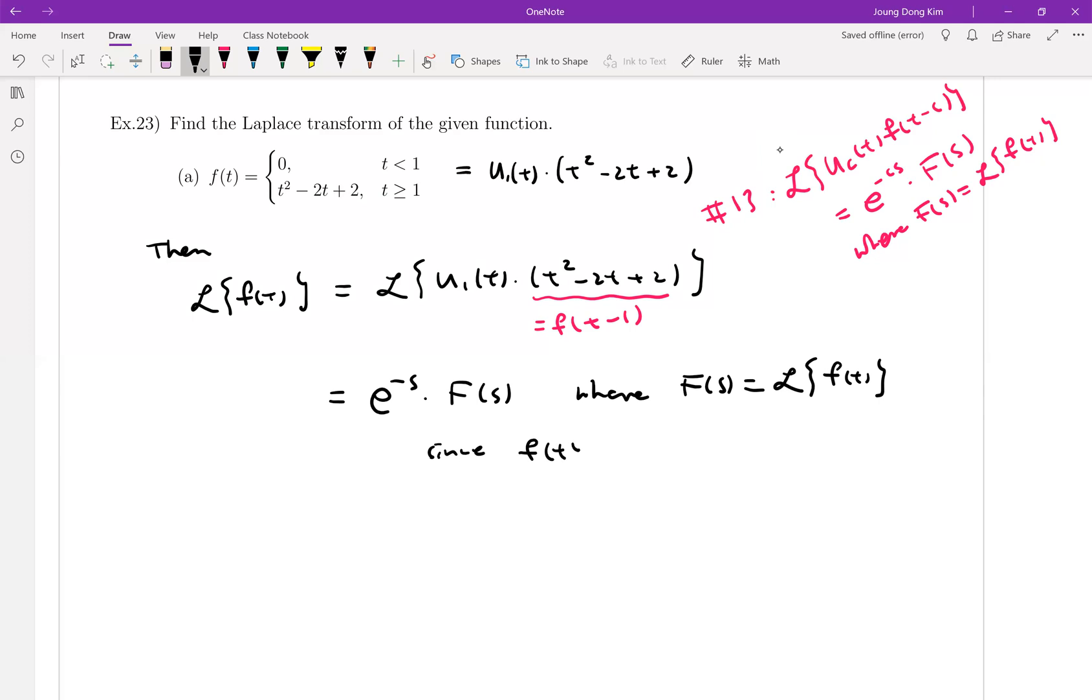So since my f(t-1) is t squared minus 2t plus 2, and what we're going to do is we're going to plug in t is equal to t plus 1. Then this will be (t+1) squared minus 2(t+1) plus 2. This is a way to make your function with a t, f(t). Then this is equal to t squared 2t plus 1 minus 2t minus 2 plus 2, which is equal to t squared plus 1. That's it.